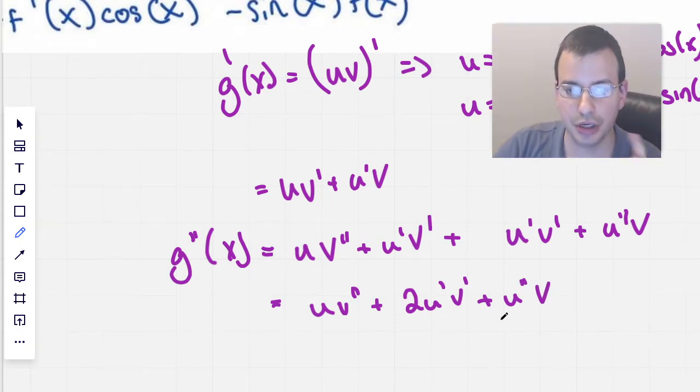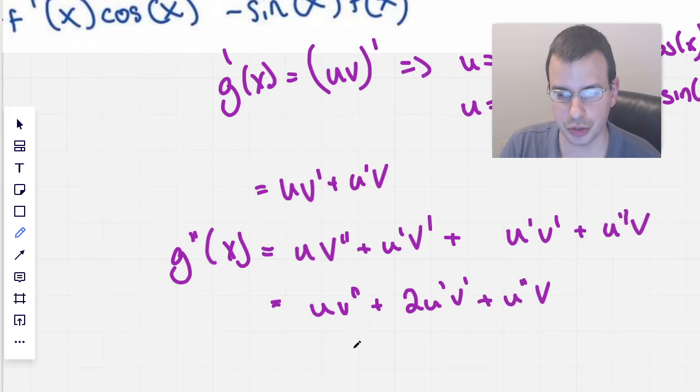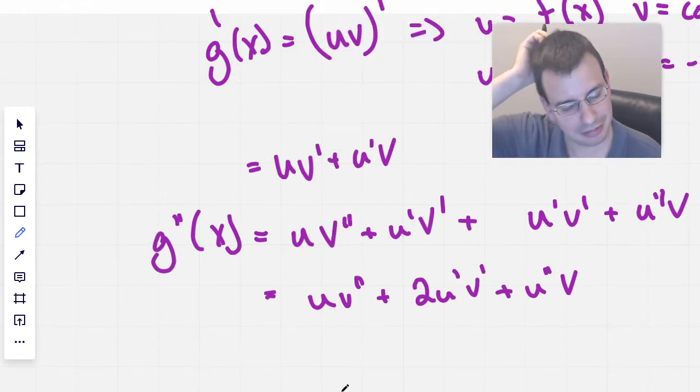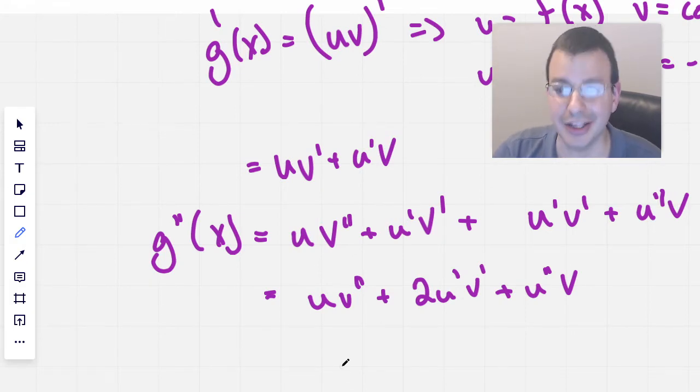Two u prime v prime plus u double prime v. So when you take the product rule and you do it twice, this is what you're going to get. Normally I'd be a little bit more formal, but eh, probably should be more formal. I'm not.